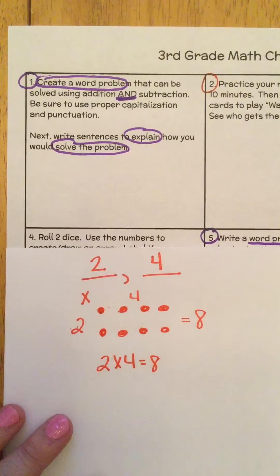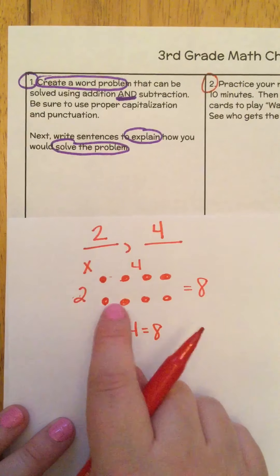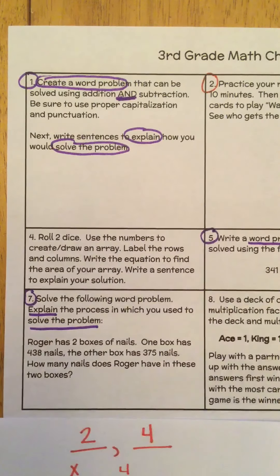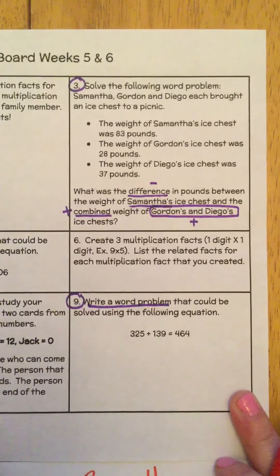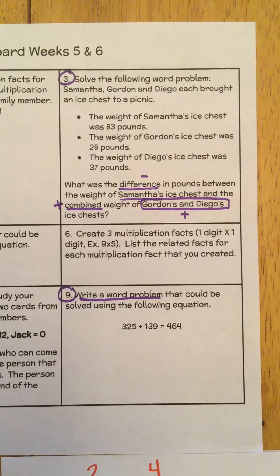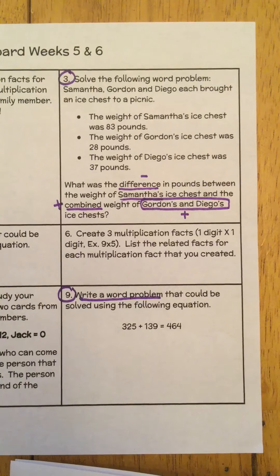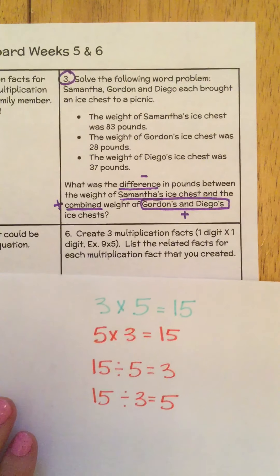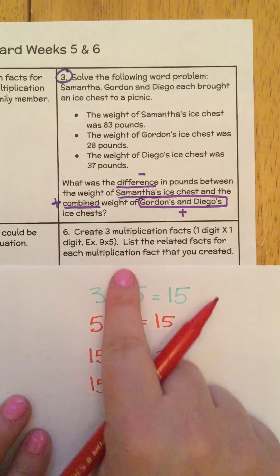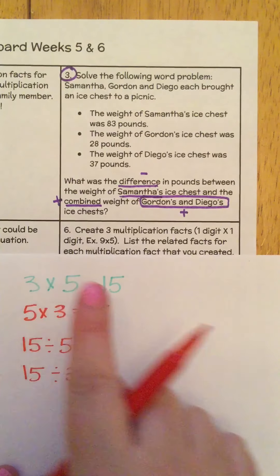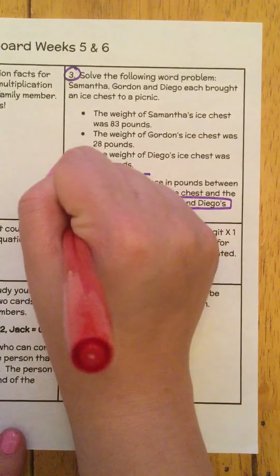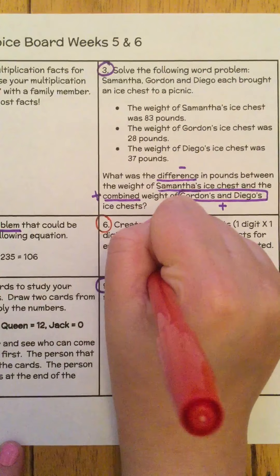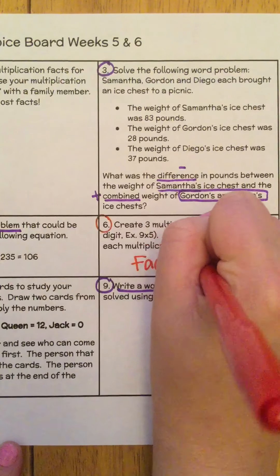Lynn has a total of 36 sodas in packs. There are six sodas in each pack. How many packs of sodas does Lynn have? She's got 36 total and six sodas in each pack — so how many packs? Then: Rebecca planted 21 flowers in her garden. She planted the flowers in three rows with the same number in each row. How many flowers did she plant in each row? That same number detail is important.